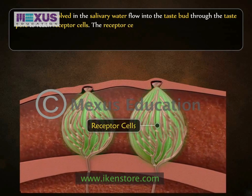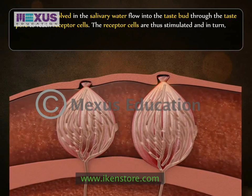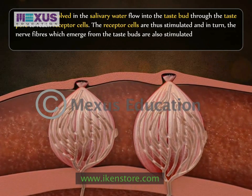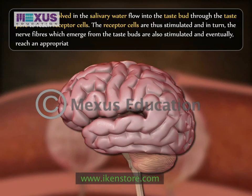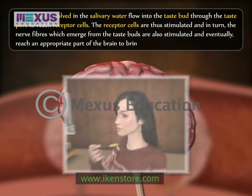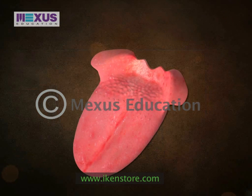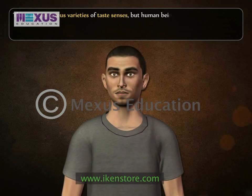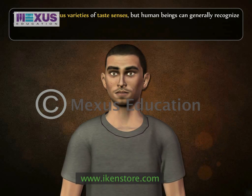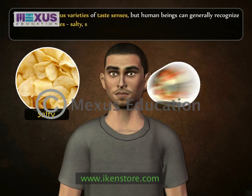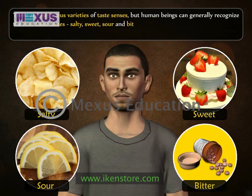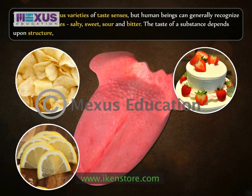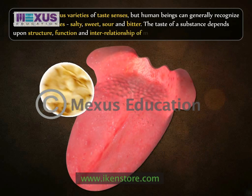Substances dissolved in salivary water flow into the taste bud through the taste pore to reach receptor cells. The receptor cells are stimulated and in turn the nerve fibers emerging from the taste buds are also stimulated, eventually reaching an appropriate part of the brain to bring about the sense of taste. There are numerous varieties of taste senses, but human beings can generally recognize four basic tastes: salty, sweet, sour, and bitter. The taste of a substance depends upon the structure, function, and interrelationship of molecules.